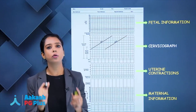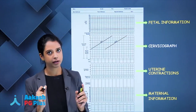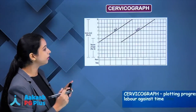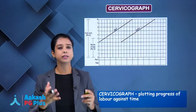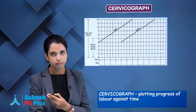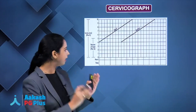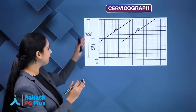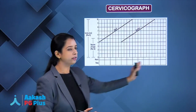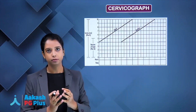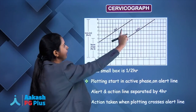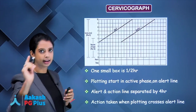Cervicograph is the most important part of the partogram. It is a graph which tells you the progress of labour against time — specifically, the descent and dilatation with respect to time. It has two lines: the alert line and the action line.